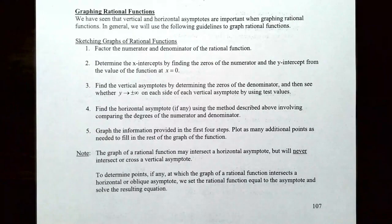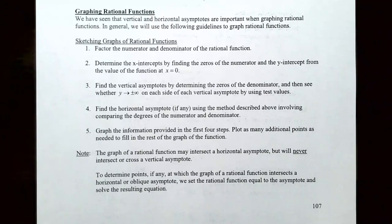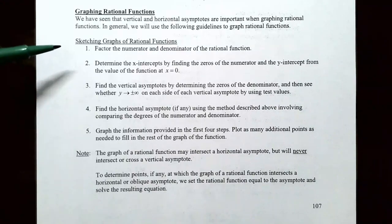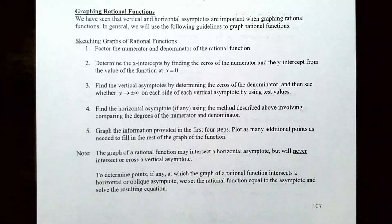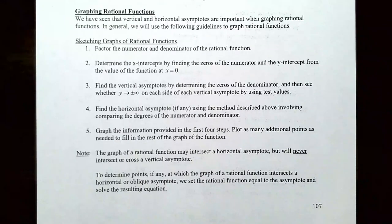So graphing rational functions. We've already seen that vertical and horizontal asymptotes are extremely important when graphing. In general, we use the following guidelines. Step one: factor both the numerator and denominator, because a common factor in both represents a hole in the graph when cancelled. Factoring the denominator also helps find the domain and any vertical asymptotes.